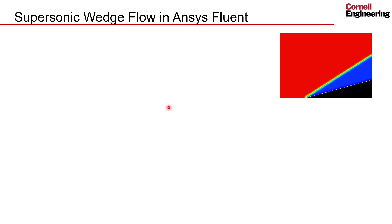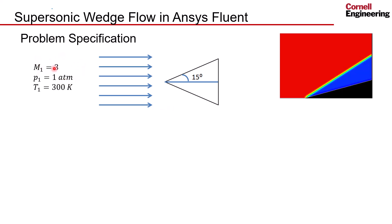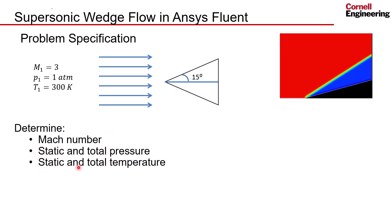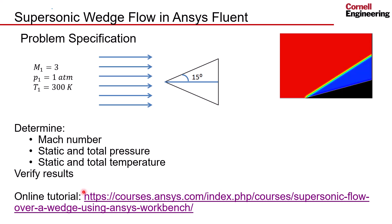We will compare the Fluent simulation results to the hand calculation. In the problem specification we are given that the free stream Mach number is Mach 3, and we're also given the pressure, temperature, and half the wedge angle is 15 degrees. Through the simulation we want to determine the Mach number behind the shock, static and total pressure, static and total temperature. We will verify results through hand calculations and adaptive mesh refinement, showing how to refine the mesh just where the shock is. The whole process is covered in an online tutorial available at courses.ansys.com — search for supersonic wedge to find the module.